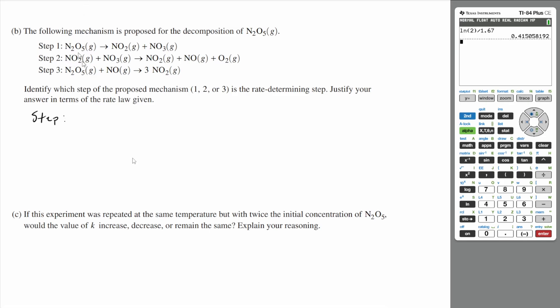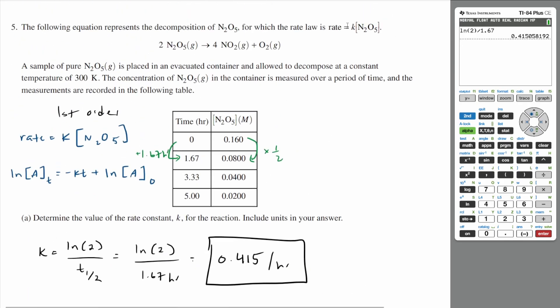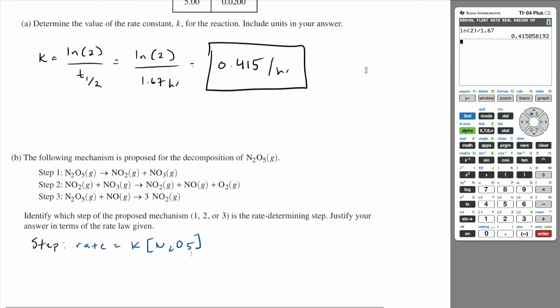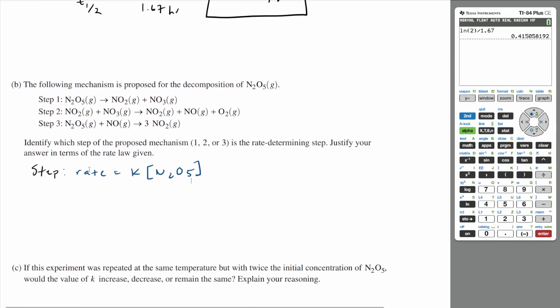If you look, that's exactly what our rate is going to be. It should be that rate is equal to k times N2O5 to the first power. And that was our rate law for the overall rate. So the overall reaction has a rate law of k times N2O5. And that's the rate law you get with step one. I got to write step one.